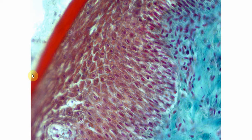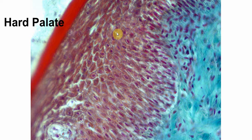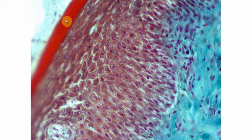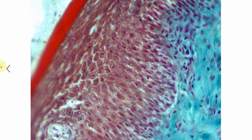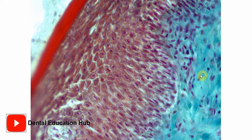The locations in the oral cavity where this type of mucosa is present: it is mainly present on the hard palate, because in the hard palate there is a thick layer of keratin. Other parts of the oral cavity where this type of mucosa is present include the gingiva, and some parts of the specialized mucosa also have a keratinized layer. The connective tissue of masticatory mucosa consists of densely packed collagen fibers.